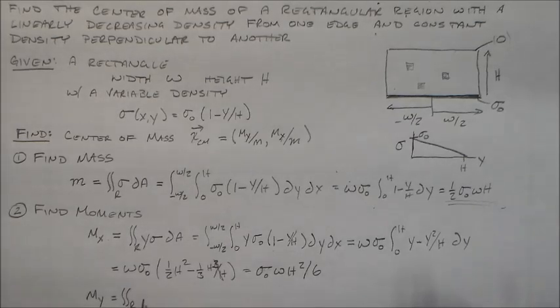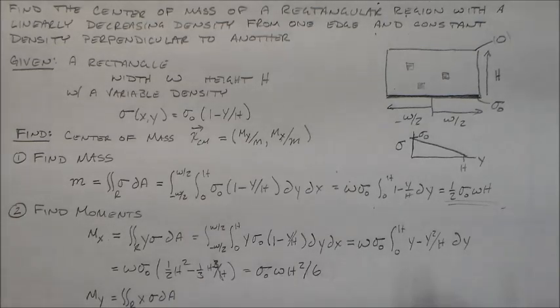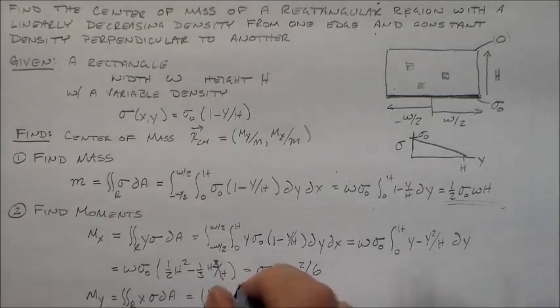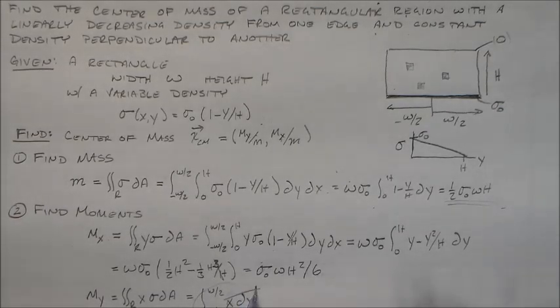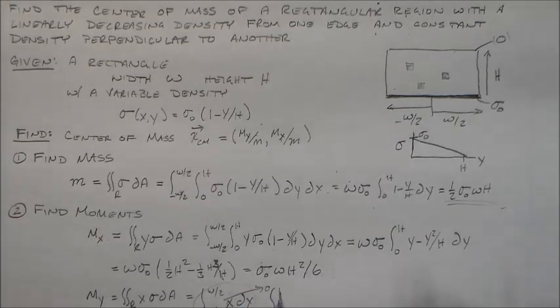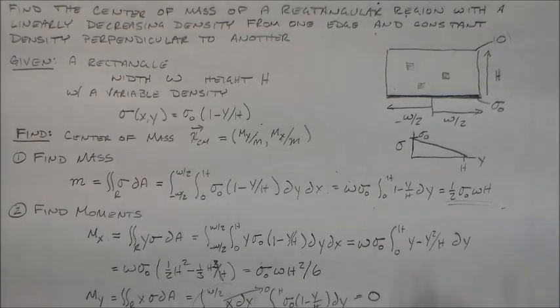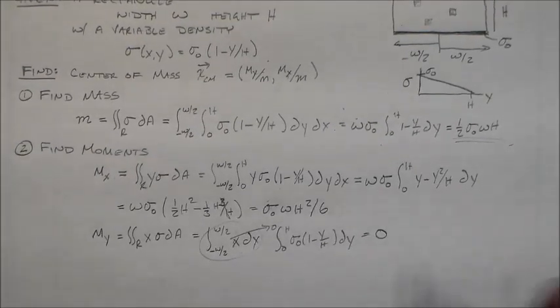Then we do a double integral with the other direction with an x there. What we have here is something really nice, which is minus w over two to w over two dx of x dx. Well, what is that? That guy's zero, right? So we also have whatever we were going to do over here, which was sigma naught one minus y over h. So even though we already did this bit here, we know that's going to zero, so that's zero.